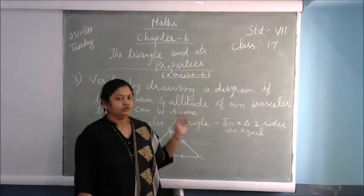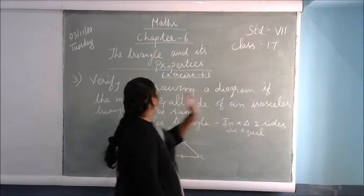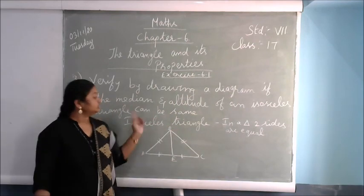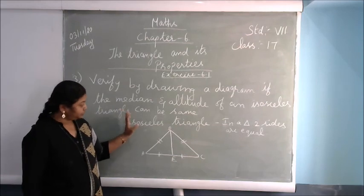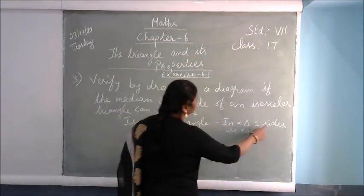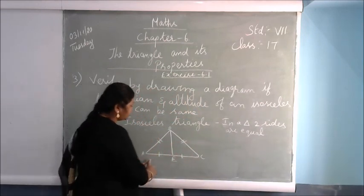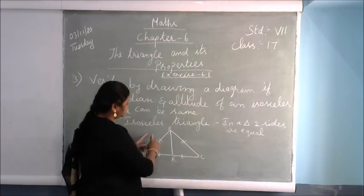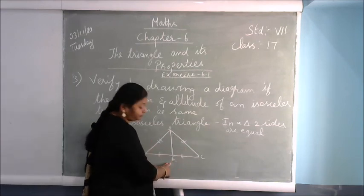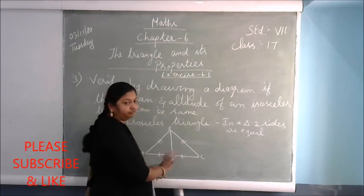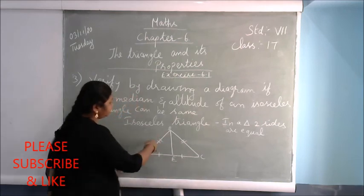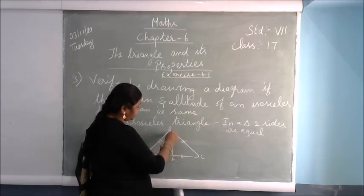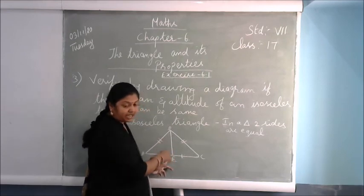Now the third sum: verify by drawing a diagram if the median and altitude of an isosceles triangle can be the same. An isosceles triangle has two equal sides and one different side — the base is different. If the two slant sides are four centimetres each, the base can be three centimetres or six centimetres — any different measurement.